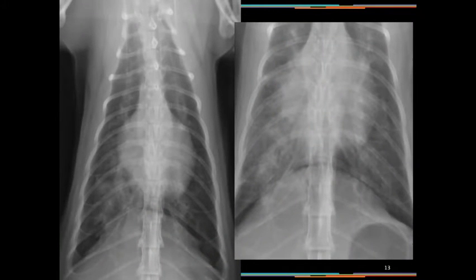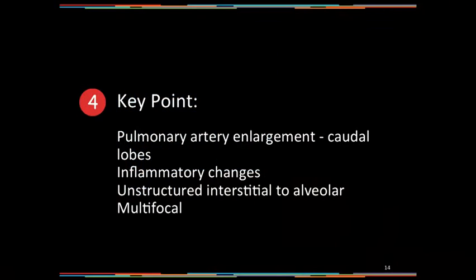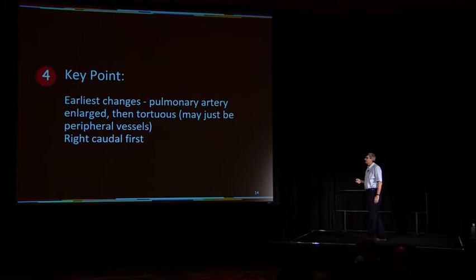These arteries are enlarged and tortuous, but the dog was normal on physical examination. If you went back and re-listened, you might hear something in his lung sounds. From a purely physical exam standpoint, he might be slowing down when you try to jog him. But the reality is you can have a normal physical exam with changes like this, or a coughing dog with normal radiographs. The earliest changes are in fact pulmonary artery changes — enlarged, tortuous — and the right caudal lung lobe is the first to become enlarged.